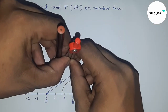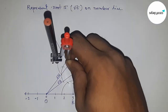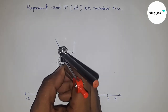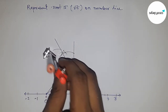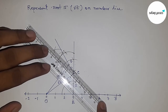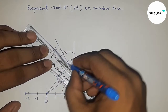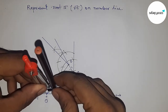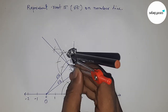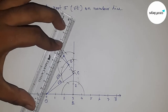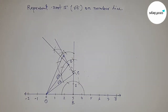Next, constructing root 15. First constructing a perpendicular line on point D. Joining this. Taking the length between any two numbers by compass, putting the compass on point D, and cutting the line. This is point E — one unit length.